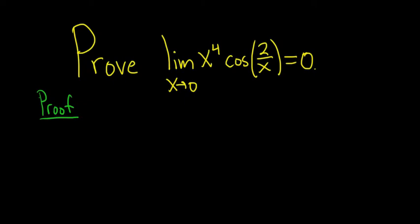So if you just plug in 0, you end up with 0 times the cosine of 2 over 0. And this doesn't make sense because you can't have 0 on the bottom. So the squeeze theorem is the obvious choice mainly because you have this cosine function.